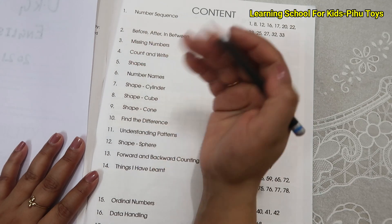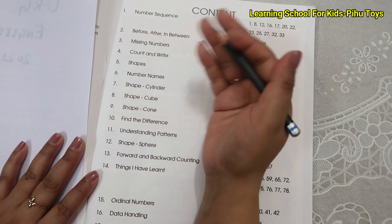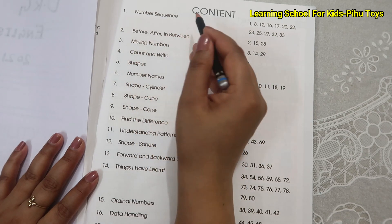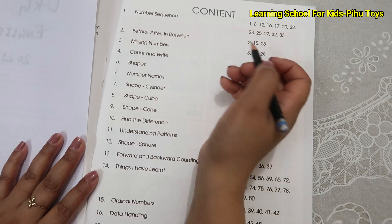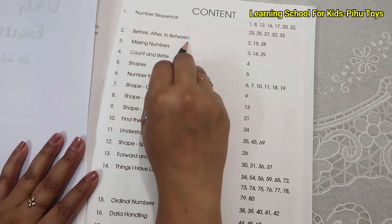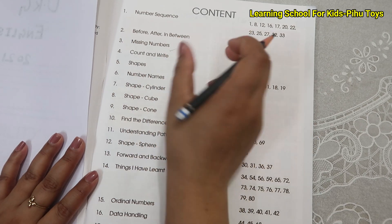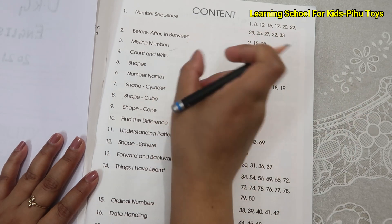After that, it comes to UKG. So what can you study in UKG? First, the numbers you can study. Before and after, between the concepts, the students will be cleared. There are missing numbers. Count and write. Like when you give the object, you have to count and write.